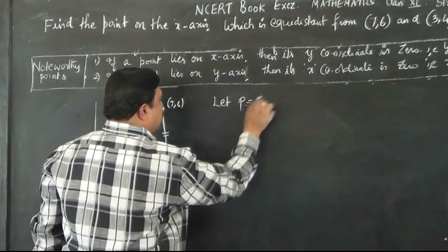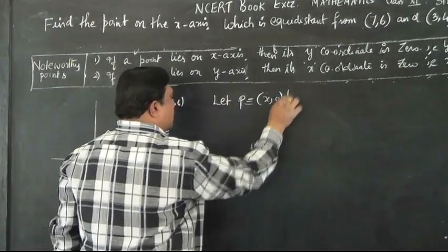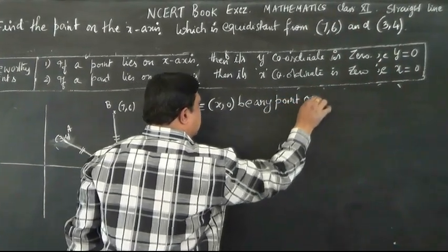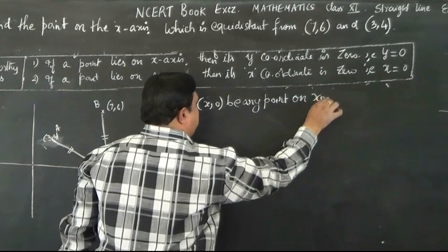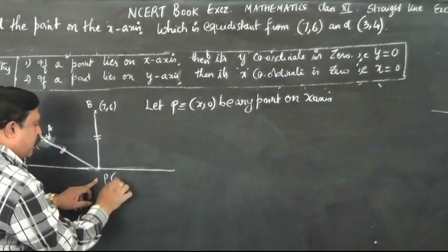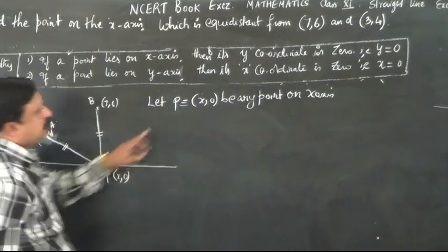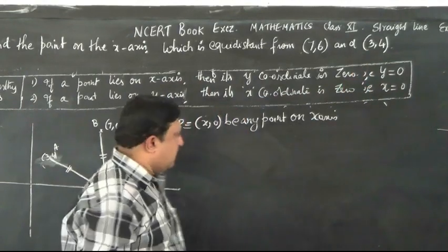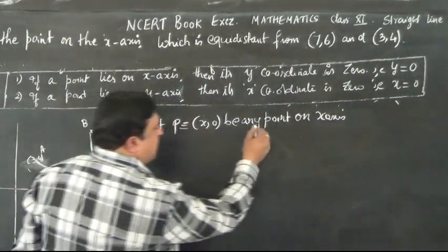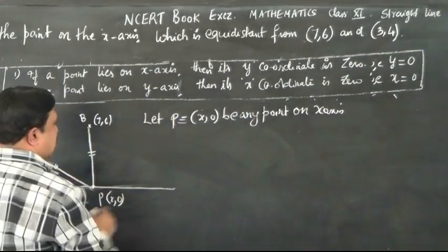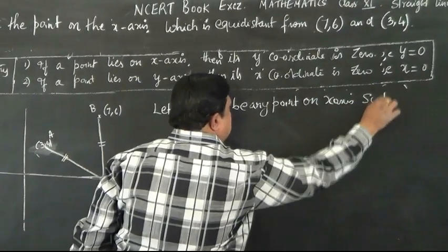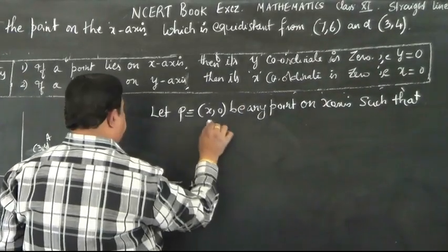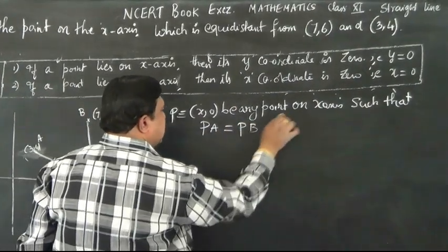Let P equals (x, 0) be any point on the x-axis. If you take any point on the x-axis, then its y-coordinate must be 0, because for a point lying on the x-axis, y equals 0. Let P equals (x, 0) such that PA equals PB — this is equation 1.